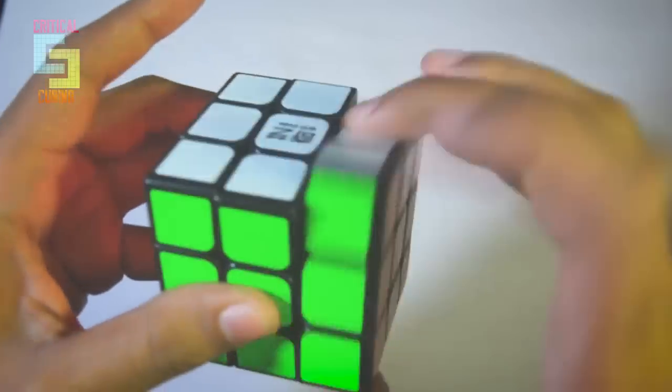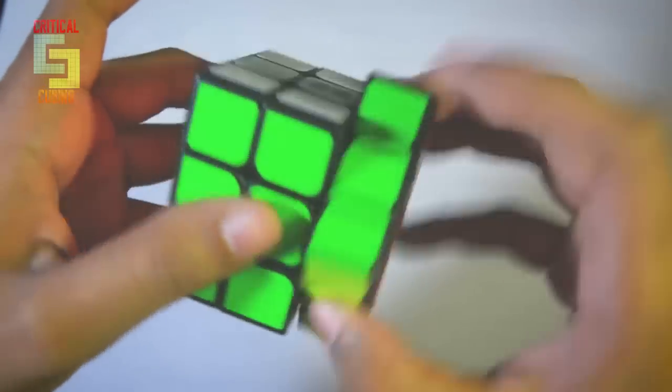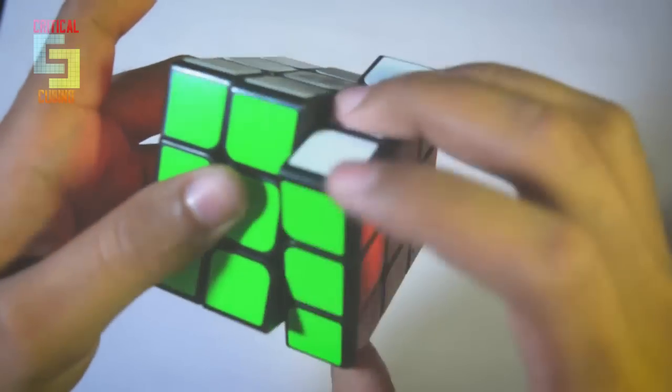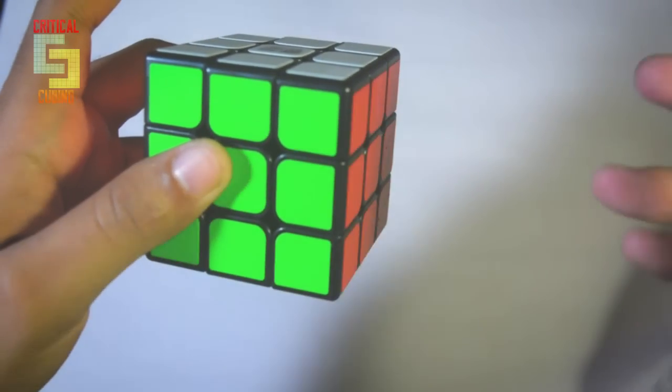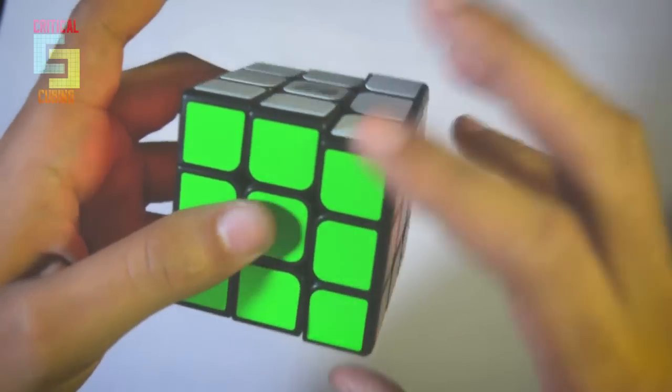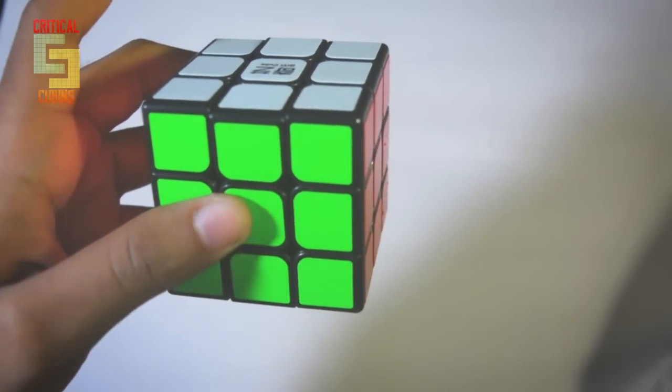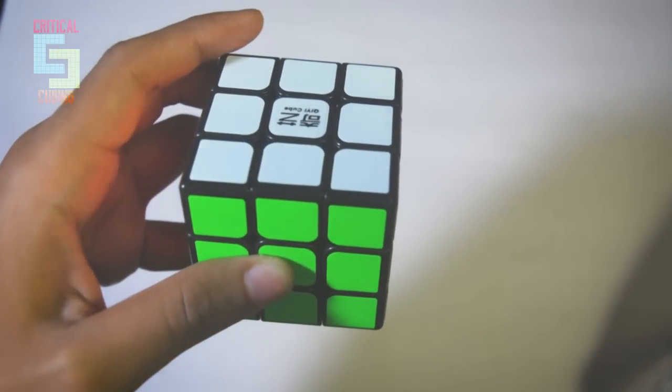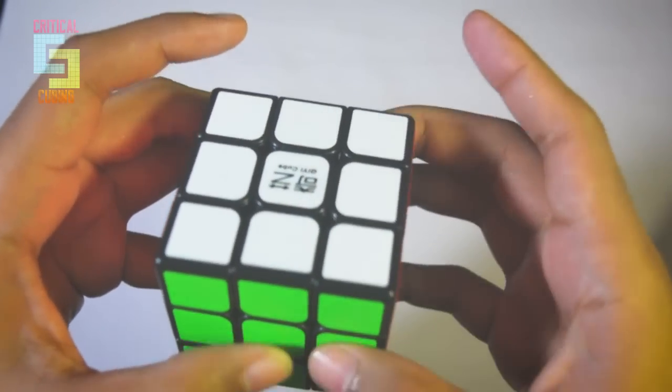It has this kind of sandy kind of a turning as of now, which is getting smoother as I am turning. So the feel has changed a bit from when I first started turning the cube, and it is becoming more and more smoother. So the feel is definitely changing. And yeah, that is what I can say of this GE 6.0cm cube as of now.